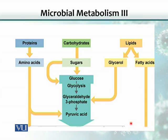Organisms prefer carbohydrates if they are present in the medium. But if they are not, then they can utilize proteins and lipids. These proteins and lipids get channeled into the central carbohydrate-driven metabolic pathway. They get converted into intermediate substances that can enter into the carbohydrate metabolic pathway.